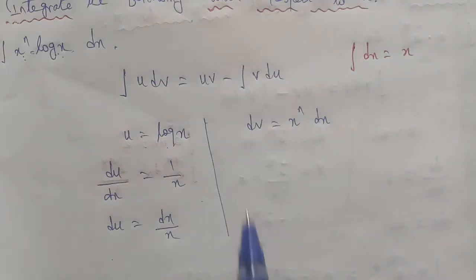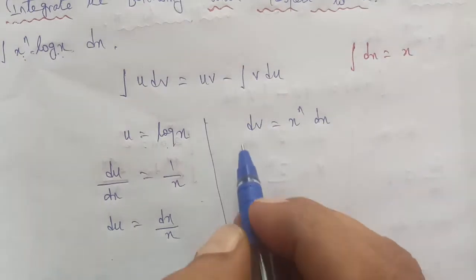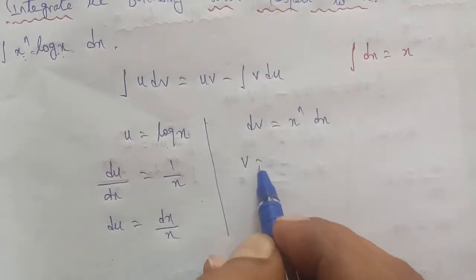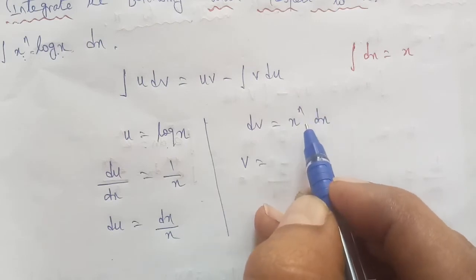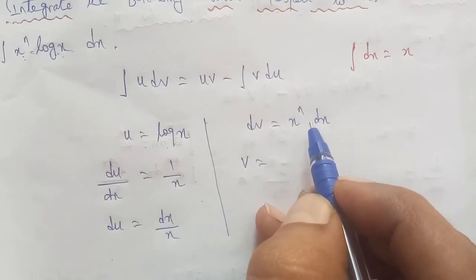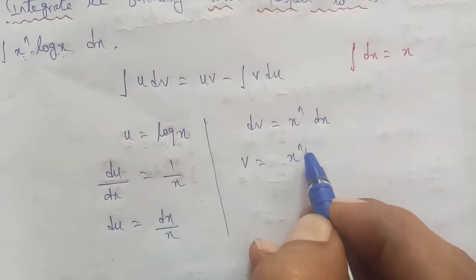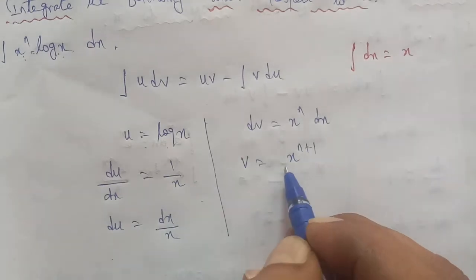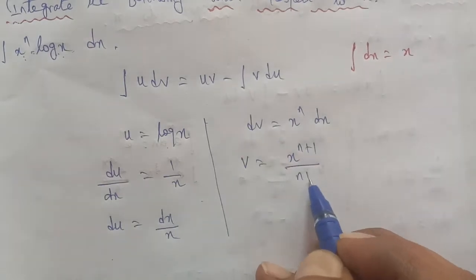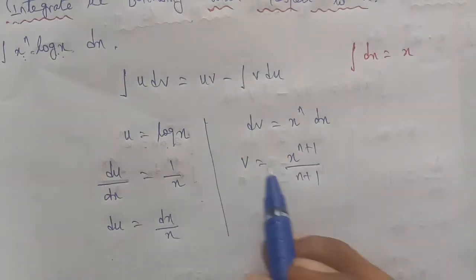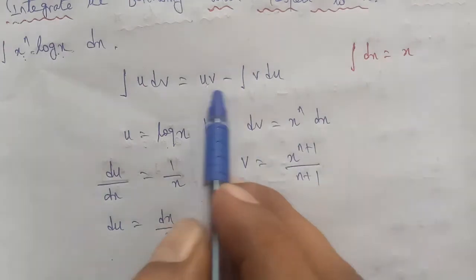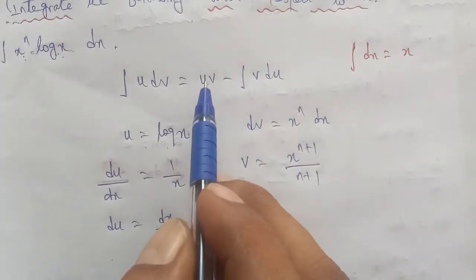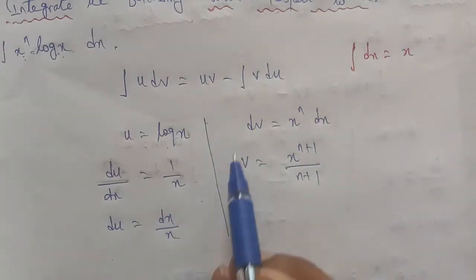The integration of x power of n dx is equal to x power of n plus 1 by n plus 1. This is a direct formula — it is x power of n plus 1 by n plus 1, not just x. So we now have the u, v, and du terms ready for substitution.